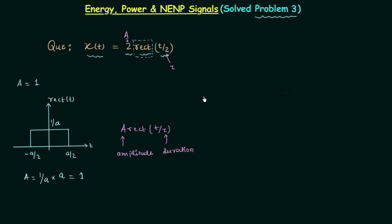We have two different methods to find the answer. In Method 1 we first obtain the waveform of the signal and by looking at it we determine the nature of the signal. In Method 2 we calculate the average power of the signal, and from that value we comment on the nature of the signal.